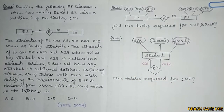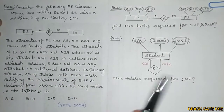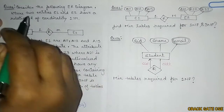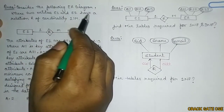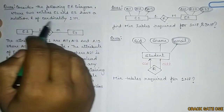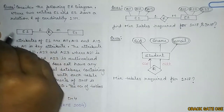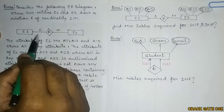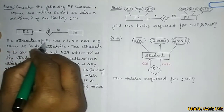Please subscribe to the channel if you have not subscribed yet, and press the bell icon so you get notified whenever I upload a new video. Now let's start with the first question. Consider the following ER diagram where two entities E1 and E2 are given and have a relationship R of cardinality 1 to M.